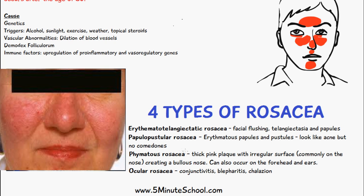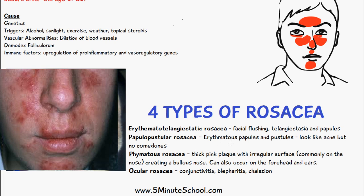The second type is papulopustular rosacea, where we have red papules and pustules that have the appearance of acne, but there are no comedones, which are blocked hair follicles.